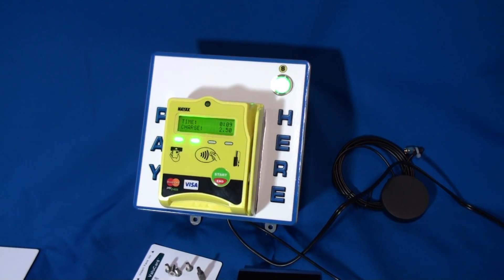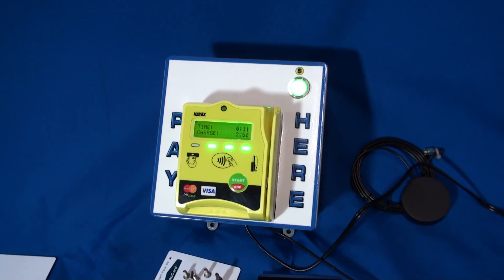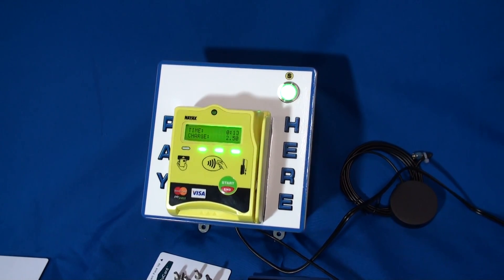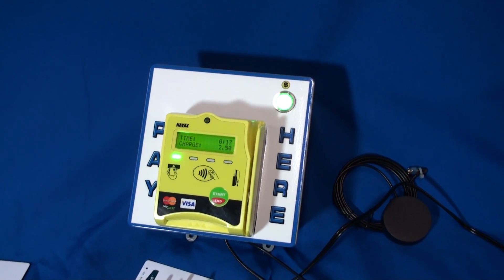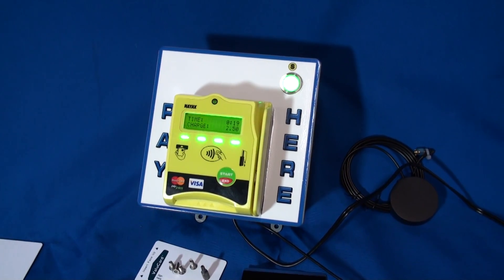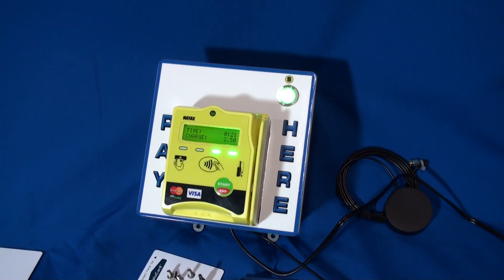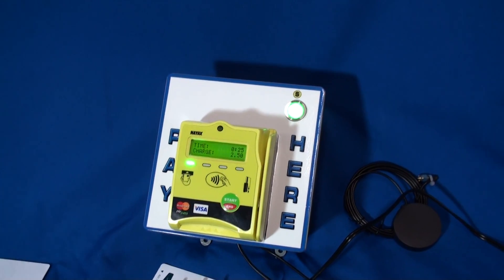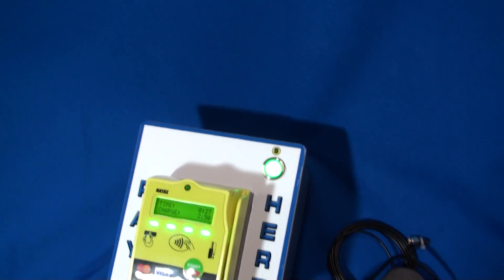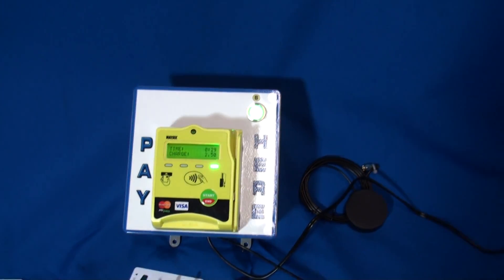It will continue doing that every five minutes until it gets to 15 minutes. We've preset the ceiling on this particular machine for 15 minutes with seven dollars and fifty cents worth of charge as a ceiling. In the upper right corner here you'll see the green LED so the user can tell that it's active and in the debit mode of his credit card.